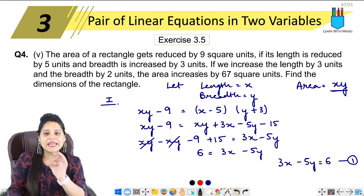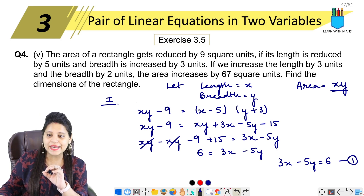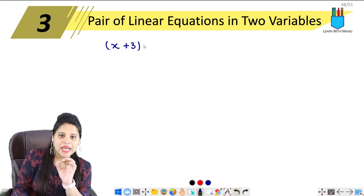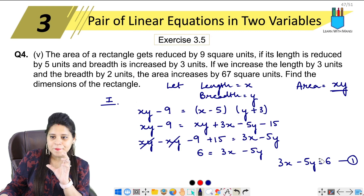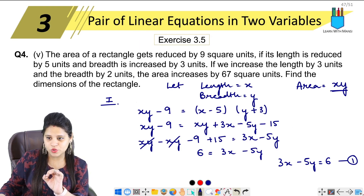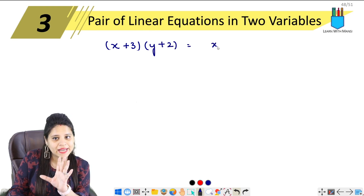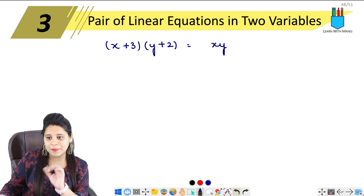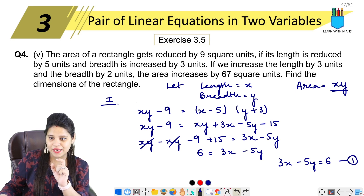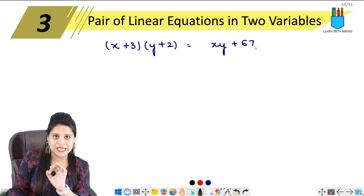Now the second condition. It says: if we increase the length by three units — that means x — increase it by three units. And the breadth, which is y, increase it by two units. So the new length is (x + 3) and the new breadth is (y + 2). The original area was x·y. Now they say the area increases by 67 square units, so the new area equals x·y + 67.